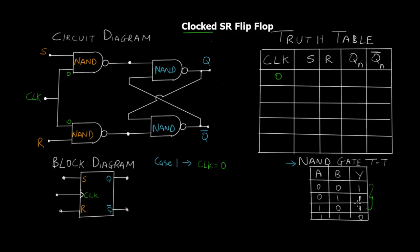You can see the first three cases have at least one zero and that's why the output is one, because zero ANDed with anything gives zero and the complement is always going to give you one. So irrespective of what S and R are, when clock is zero, the output of these first two NAND gates is always going to be one. This means S and R are a don't care condition when clock is zero.